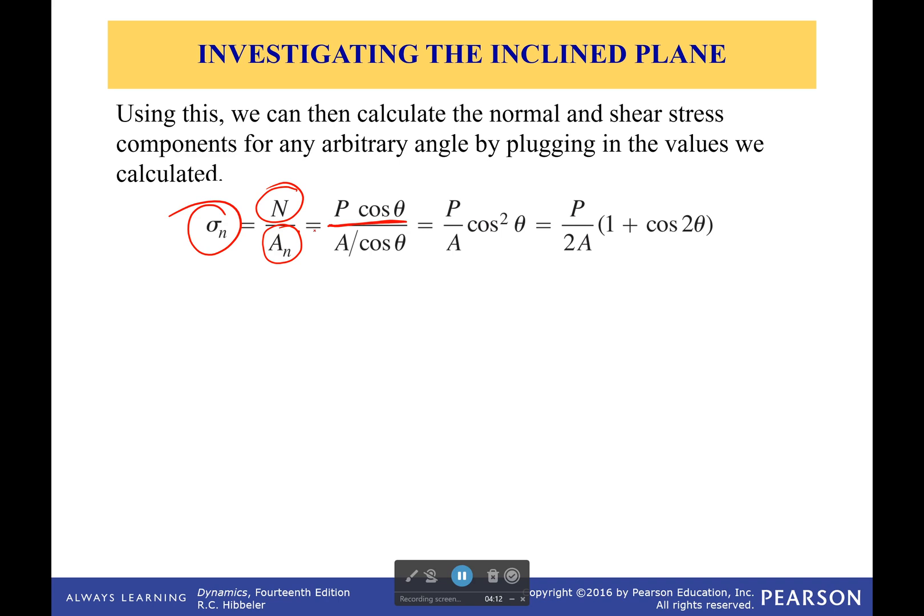P cosine theta, because our load was like this. We had our plane. Then we had our normal component and our shear component. And then our angle was right here, theta. So, P cosine theta over A over cosine theta. This is what we got from our earlier equation. We simplify somewhat and we'll come out to this equation right here using some fun trig identities.